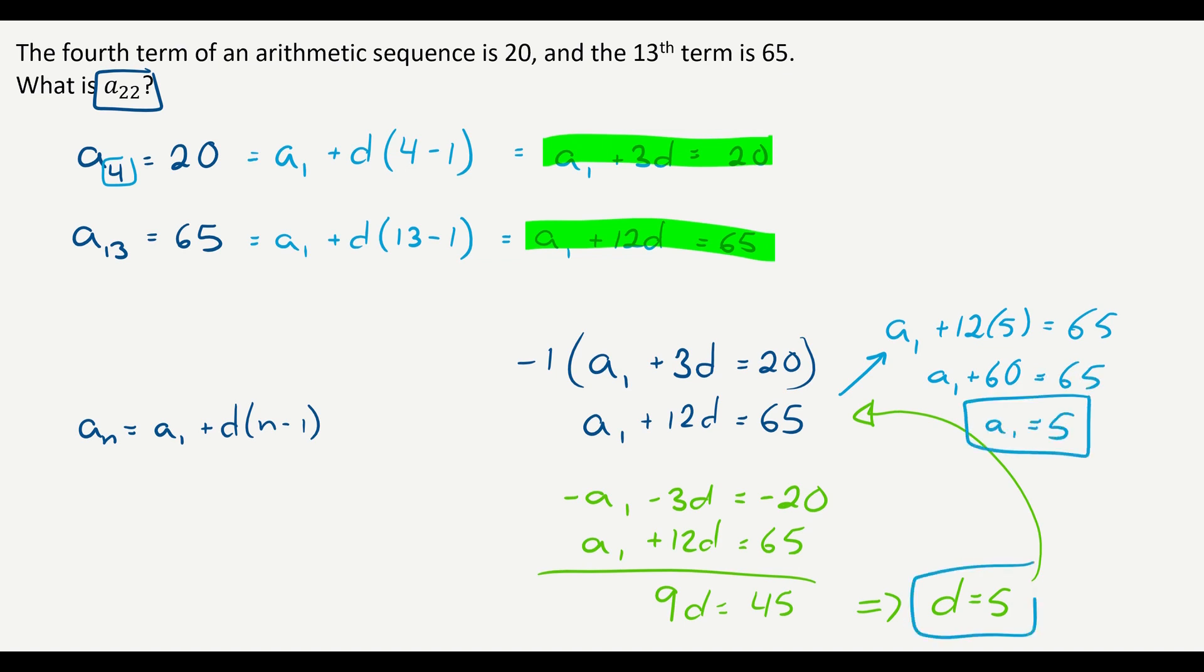I found what I need to write the rule. A sub n is equal to five, because that's the first term, plus five, because that's the common difference, times n minus one. So finally, what is a sub 22? Well, five plus five times 21, because that's 22 minus one, which is five plus five times 21 is 105, 110. So the 22nd term in the sequence is 110.